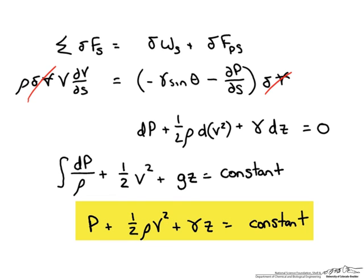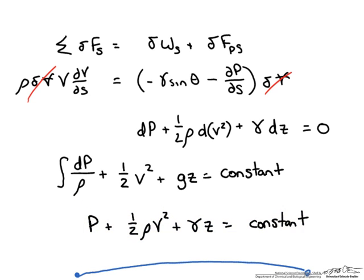This basically implies that given the assumptions we have made, we can calculate along a streamline the conditions at one point knowing the conditions at another. Check out some of the example screencasts to see how we apply Bernoulli's equation to certain systems.